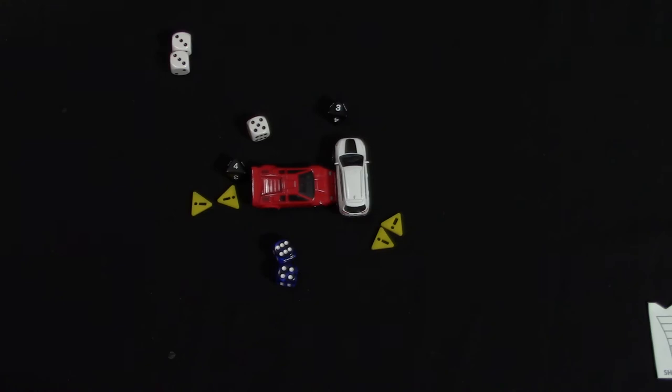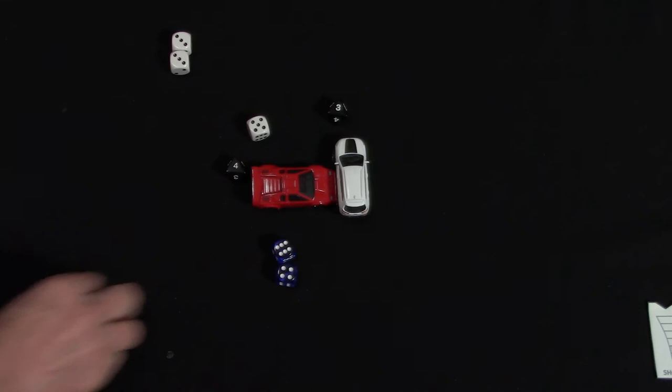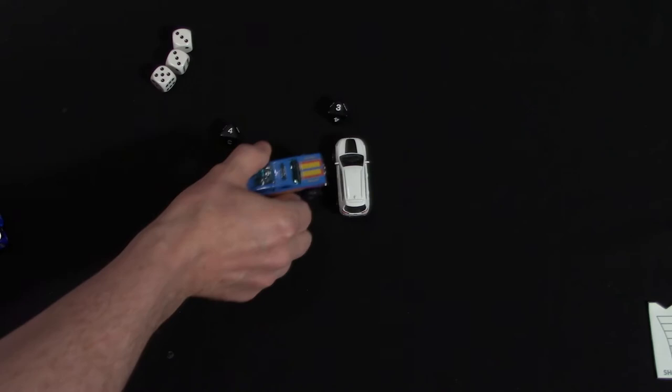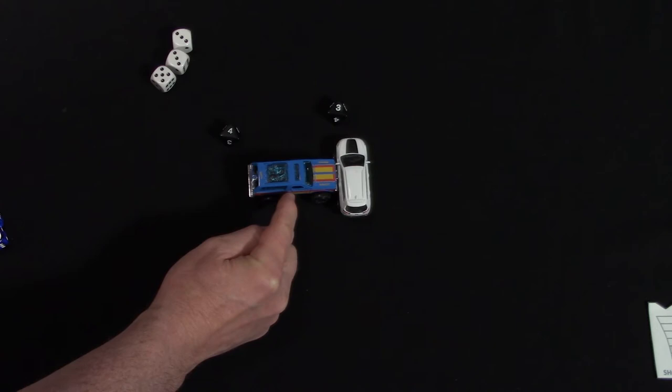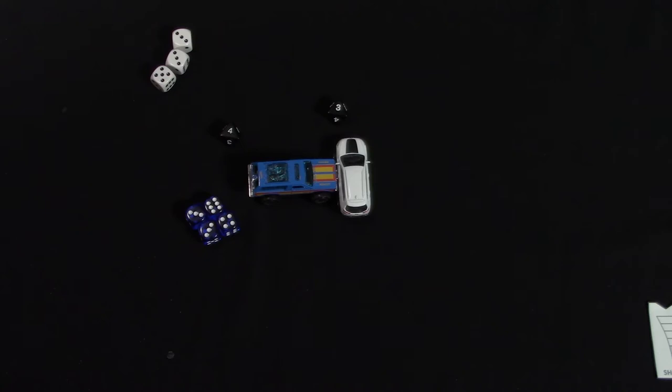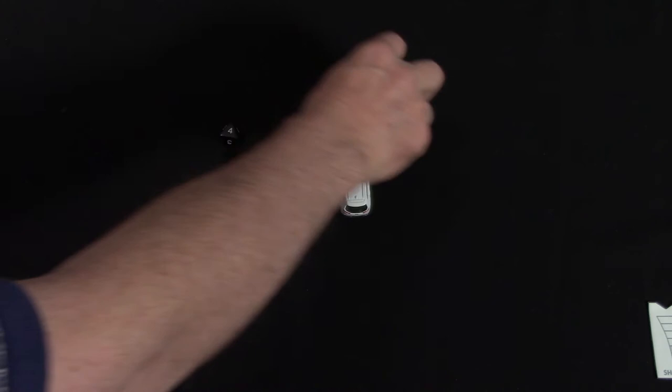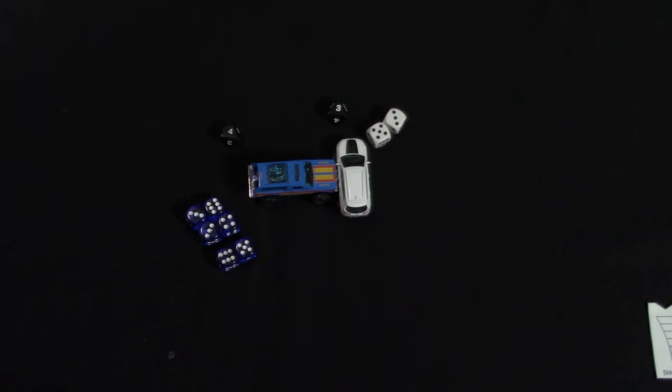Now there could be some modifiers to this. That is if it's something like this, a truck. Now this is a medium weight vehicle, this is a heavy weight vehicle. So this would normally get four, but because it's one heavier class, it's going to get two dice. And this one would get three, but because it's one lighter, it loses a die.